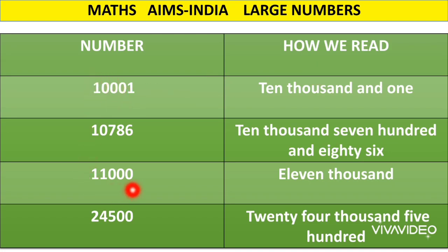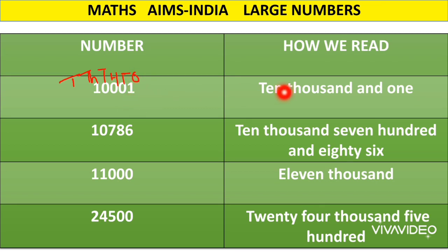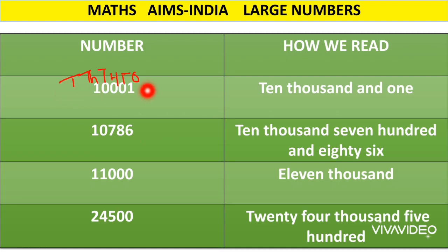Here we will learn how to read five digit numbers. The first number is 10,001. Let us write the place values: ones, tens, hundreds, thousands and ten thousands. The digit 1 is at ones place so its value is 1. The other 1 is at ten thousands place, so its place value becomes ten thousand. All other digits are zero. So we read this number as ten thousand and one.